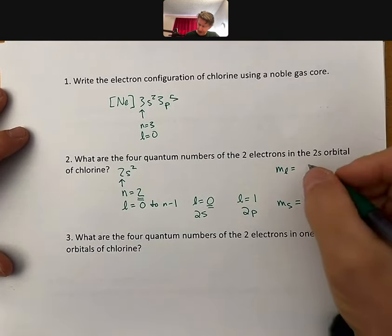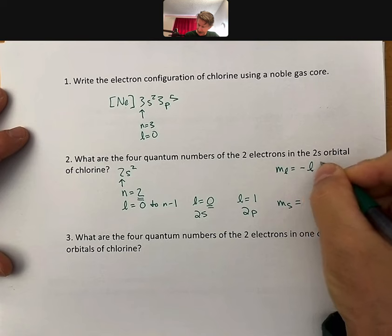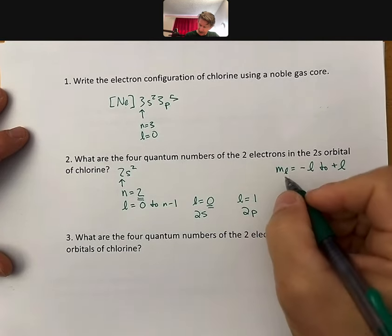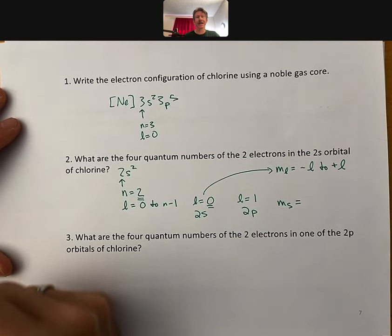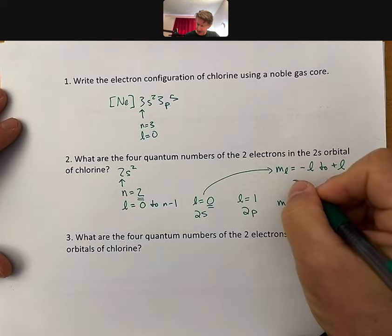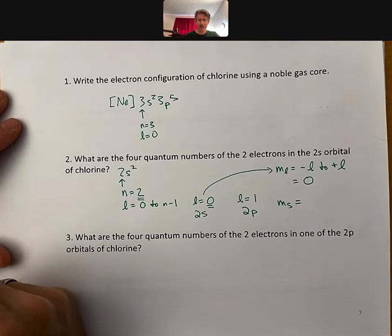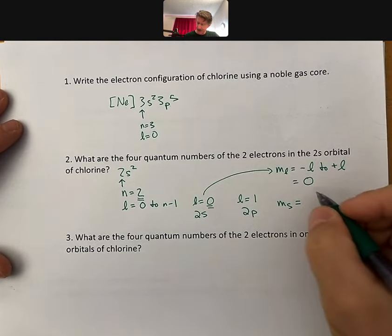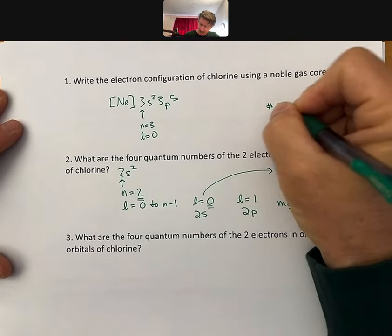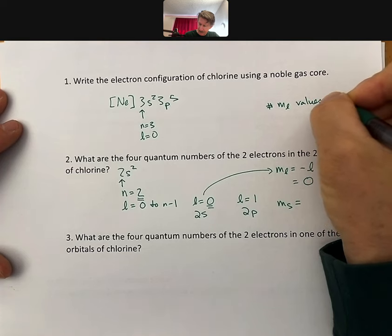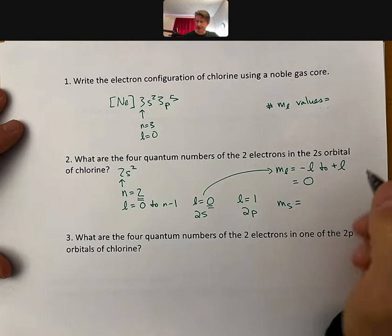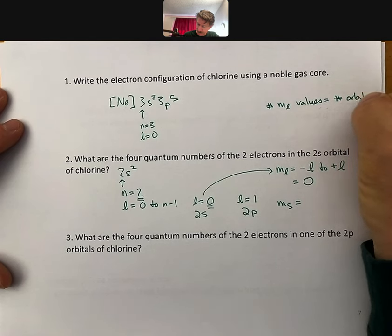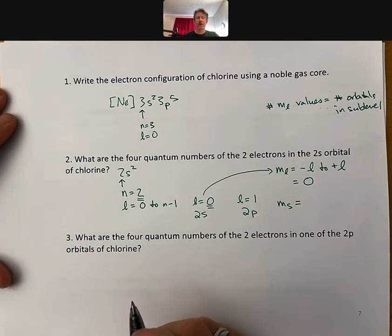m sub l goes from minus l to plus l. So, specifically, when we're talking about the 2s electrons, that means it goes from minus 0 to plus 0, which means it's just 0. And what the meaning of this is, is that the number of ml values equals the number of orbitals in the sublevel.